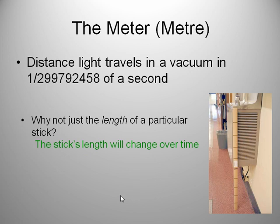It could warp with moisture, etc. So in this case, the distance that light travels in a vacuum is never going to change as far as we know.